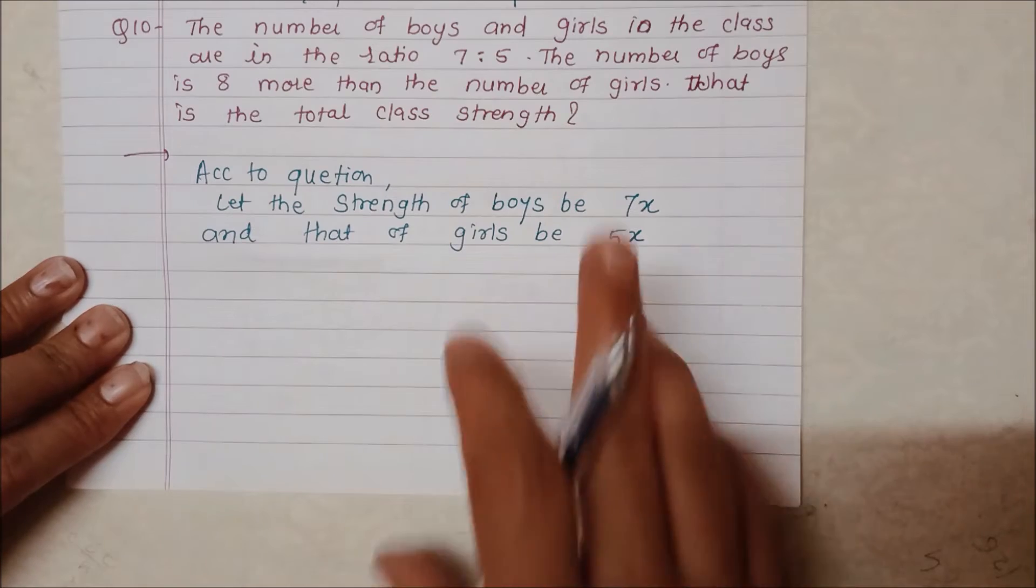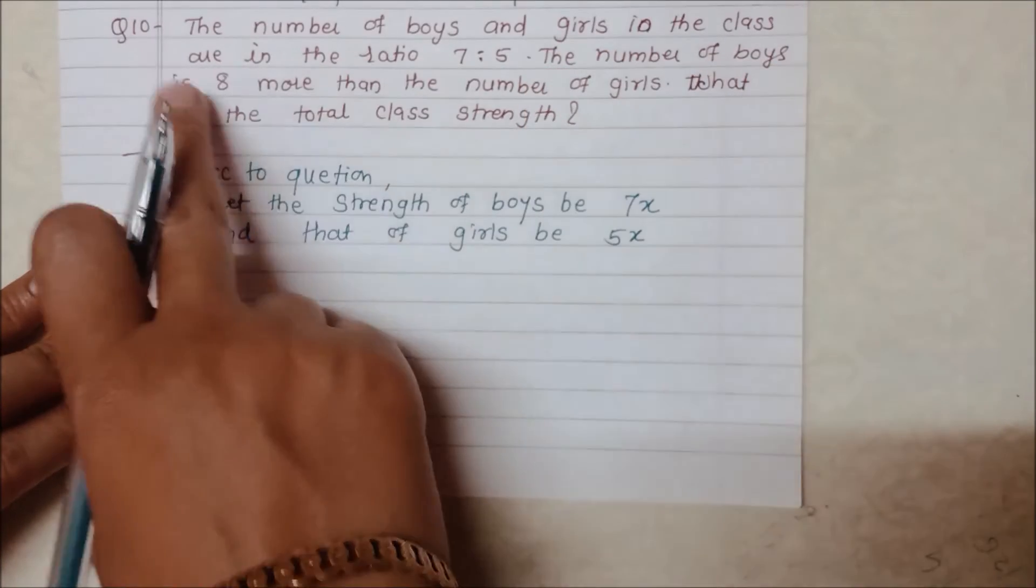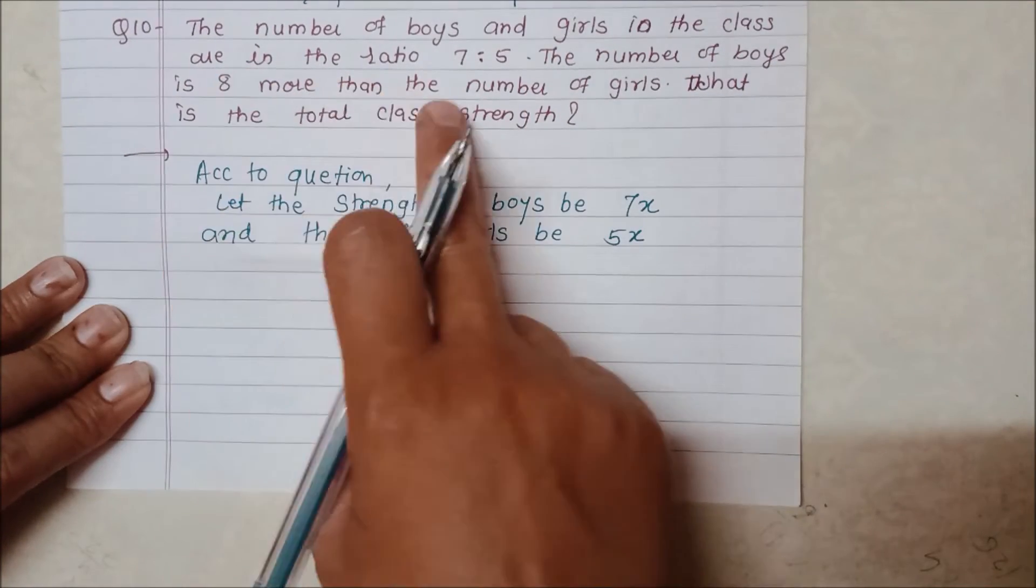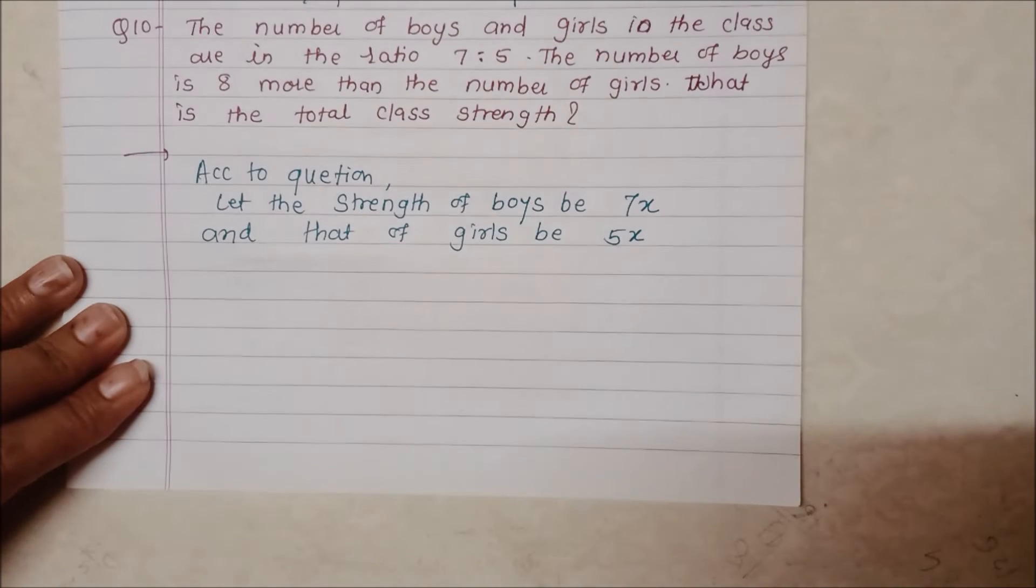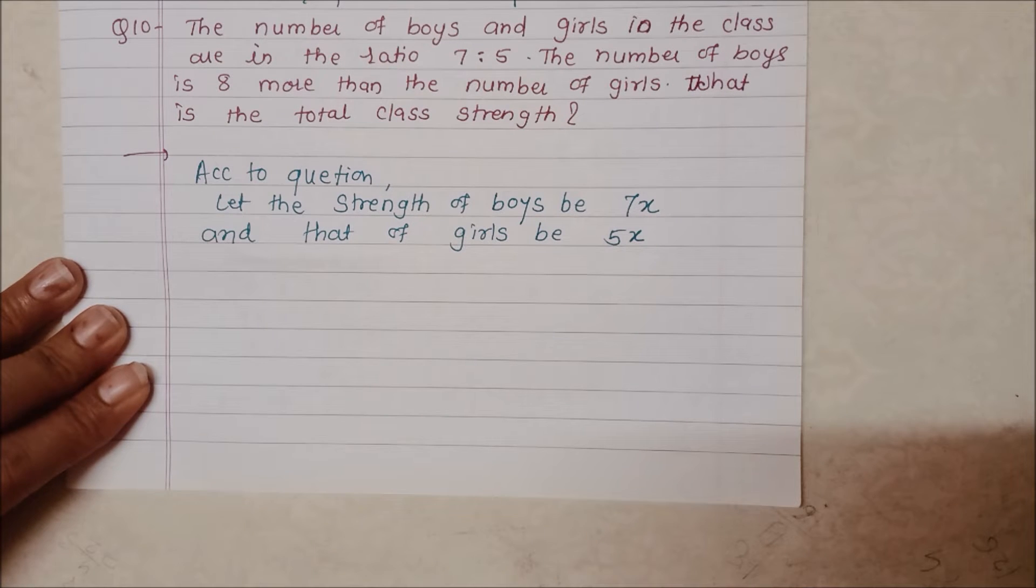And in the second condition, we have that the number of boys is 8 more than the number of girls. The girls are 8 less than boys. Or if you have the strength of boys minus girls' strength, then it's 8 more.